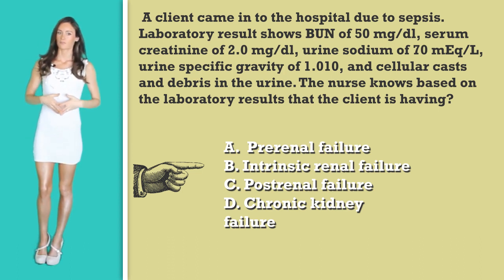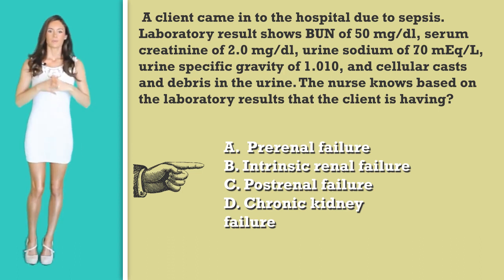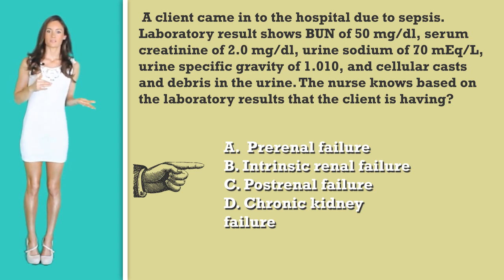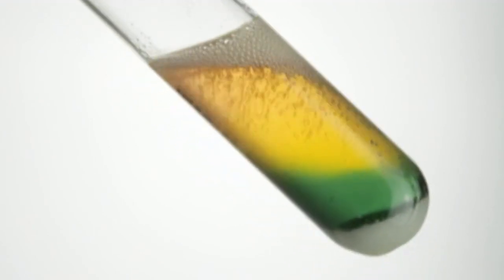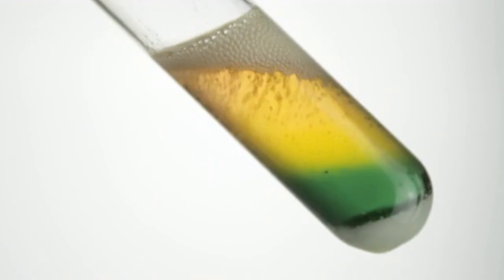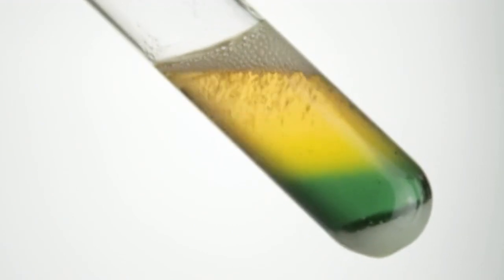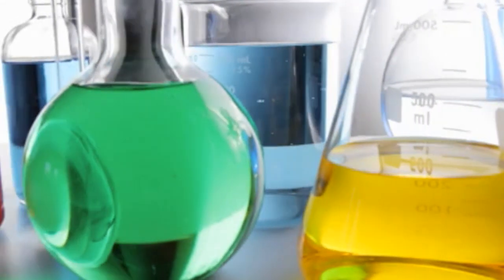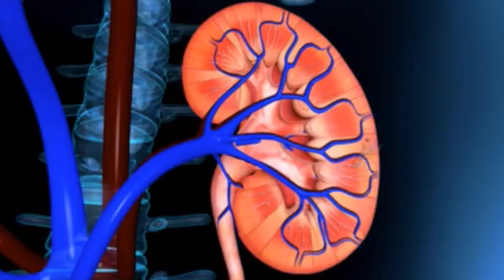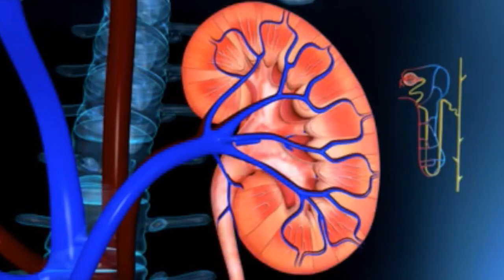Option B, intrinsic renal failure, is a possibility because the urine specific gravity at 1.010 is low. The urine specific gravity tests the composition of urine next to water to determine how well the kidneys are filtering. A normal specific gravity ranges from about 1.015 to 1.030 depending on your facility. Also, the question mentions the presence of cast and debris in the urinalysis. Both of these are indications of acute tubular necrosis, which belongs to intrinsic renal failure.